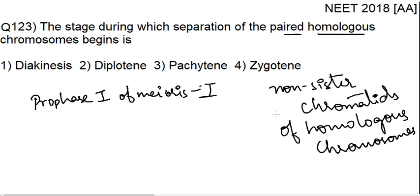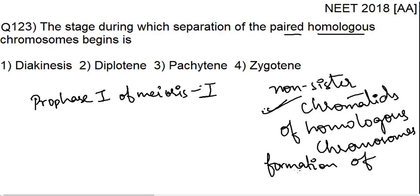For this crossing over, for this exchange of genetic material, the formation of the synaptonemal complex is important — the synaptonemal complex.